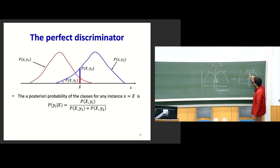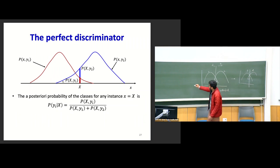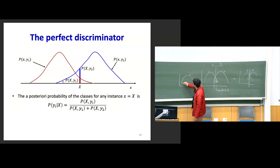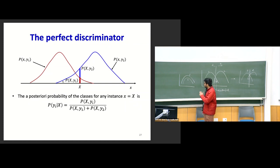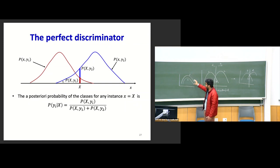The discriminator works hard to find a boundary that minimizes error. This happens continuously until the fake data distribution goes on top of the real data distribution. When this happens, the discriminator makes huge errors but the generator has learned to generate fake data close to real data — that's the whole training objective of GANs.